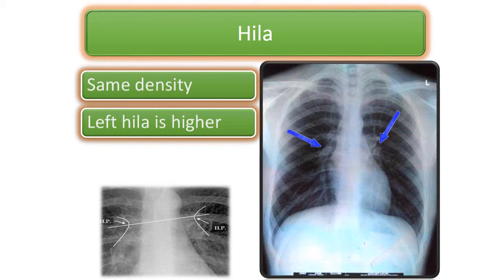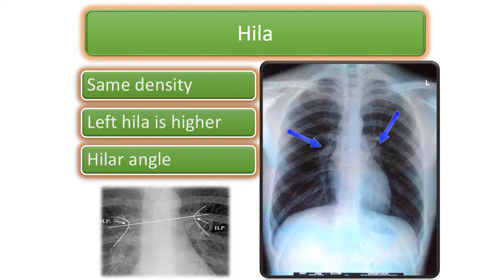Both hilums must have the same density because they contain the same number of vessels, so density will be equal on X-ray. Any variation in density on either side should raise concern for a hilar mass, lymph node, or other abnormality. The hilar angle is formed by the main pulmonary vessels going upward and downward; a widened hilar angle is pathological.